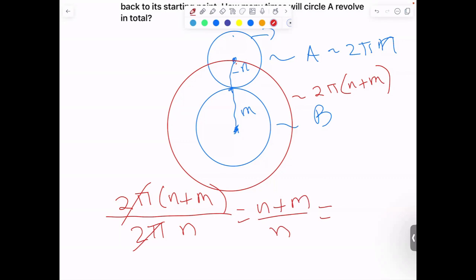We simplify the fraction to get (N + M)/N, or equivalently, M/N + 1. That's the general formula.